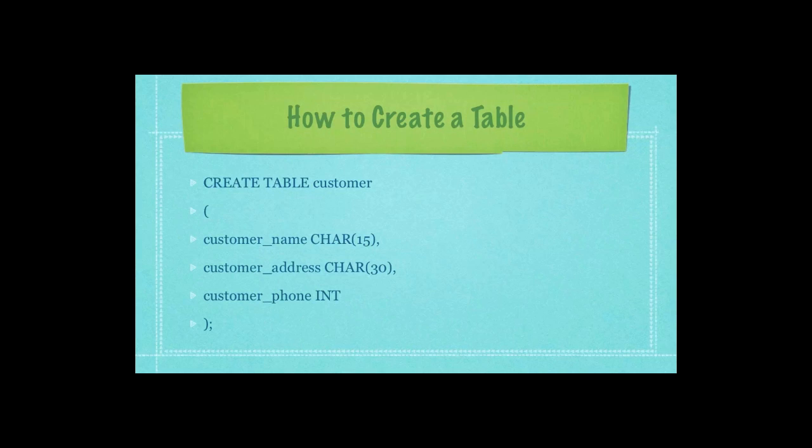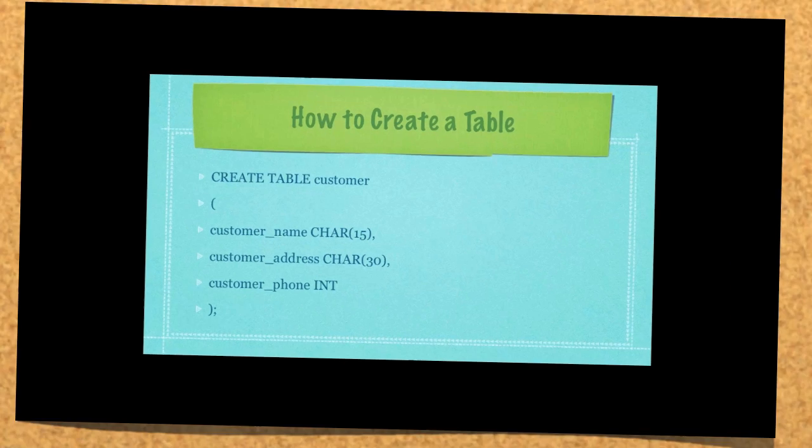First, I have customer_name, and I'm telling the database or the data server that information is going to be of a character type, meaning letters. And I expect it to be 15 characters in length. In the customer_address field, you see here, I do pretty much the same thing. You can see I end each one of these definitions with a comma. And then finally, I define that I want to be able to store a telephone number, and the telephone number is going to be an integer or a number that is not going to have decimal places. Then we end the whole thing with another bracket followed by a semicolon.